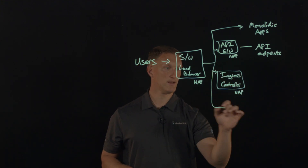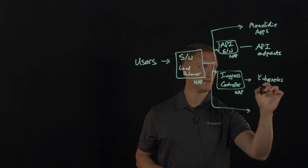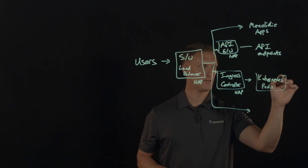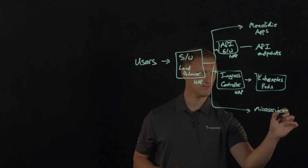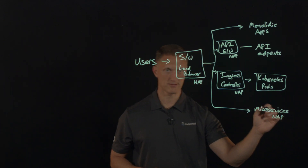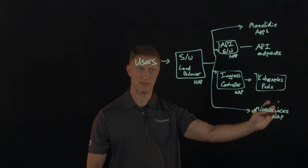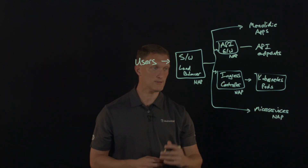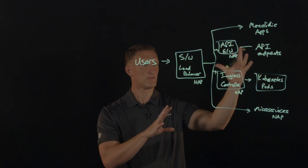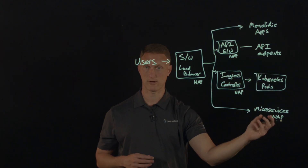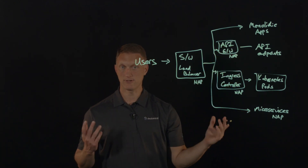From here, an ingress controller leads to Kubernetes pods coming through it. You may also have microservices, and you could load NGINX App Protect right there at the microservices level. So if you have a microservices architecture, you can get extremely close to the application with the NGINX App Protect firewall. When we talk about API protection, this covers everything from monolithic apps all the way down to microservices, and where you can deploy the firewall to guard against malicious activity.